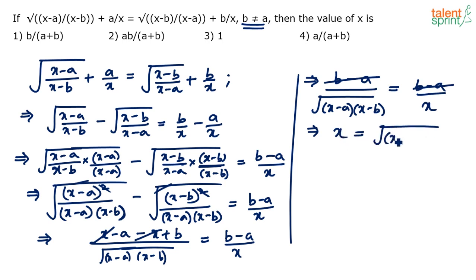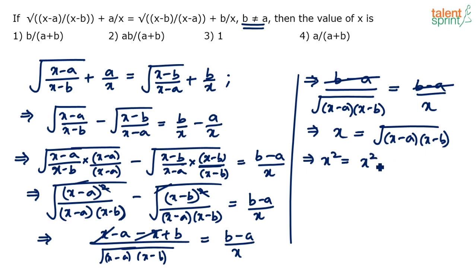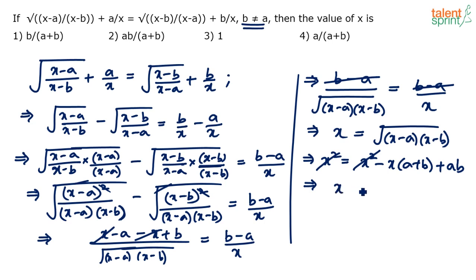Now square both sides: x² = (x−a)(x−b) = x² − x(a+b) + ab. The x² terms cancel, leaving x(a+b) = ab, so x = ab/(a+b).